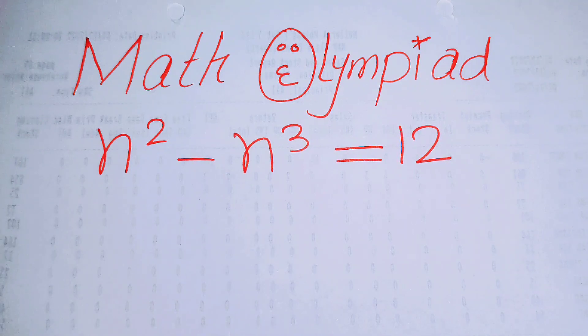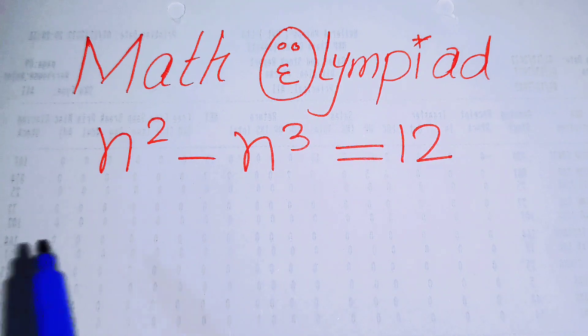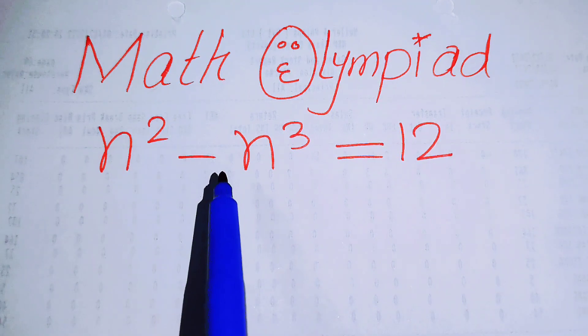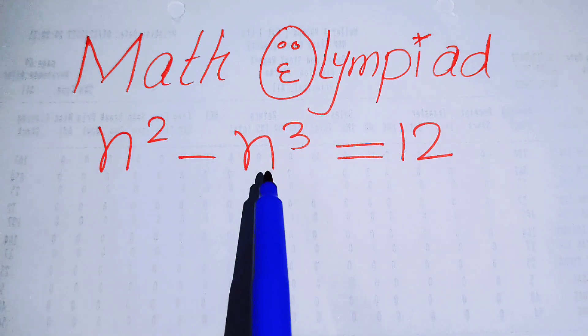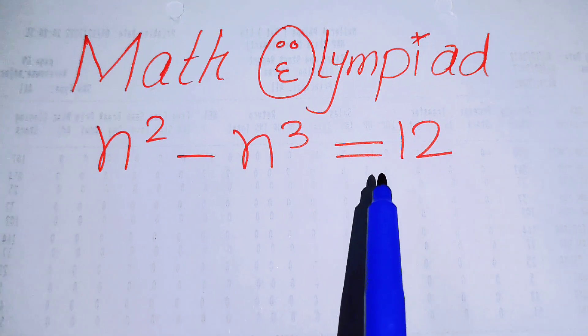Hello everyone, welcome back to the Map of Mathematics. In this video we are going to solve this nice algebra problem: n squared minus n cubed equals 12.